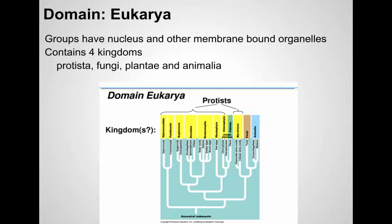Eukaryotes are all in one huge domain. They have a nucleus — a membrane that contains their DNA — and other membrane-bound organelles. They're split into four traditional kingdoms: plants, animals, fungi, and protists. What taxonomists would like to do is get rid of kingdoms here — instead of having four kingdoms, split things into smaller groups that more accurately represent their evolutionary history. This is a more cladistic approach.